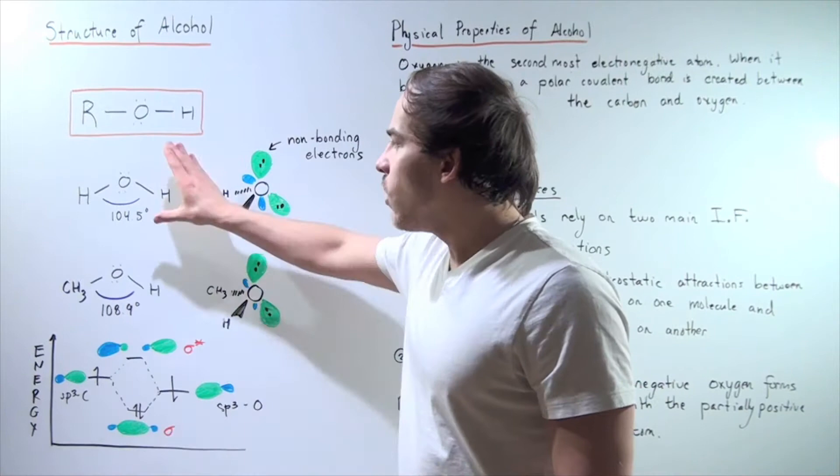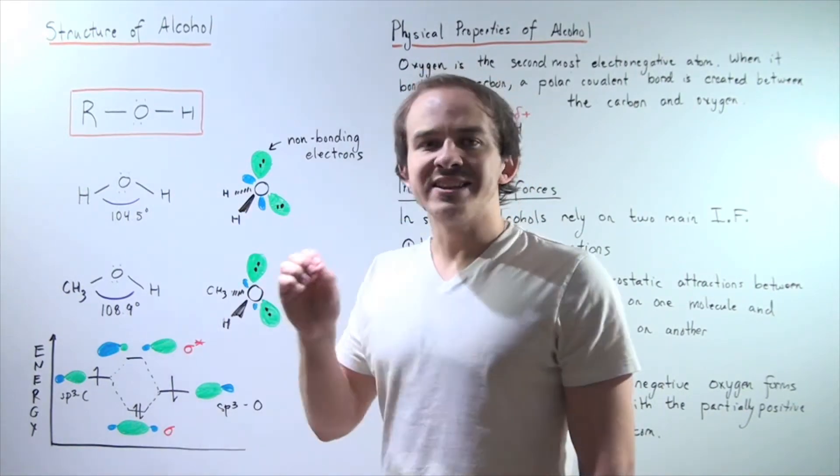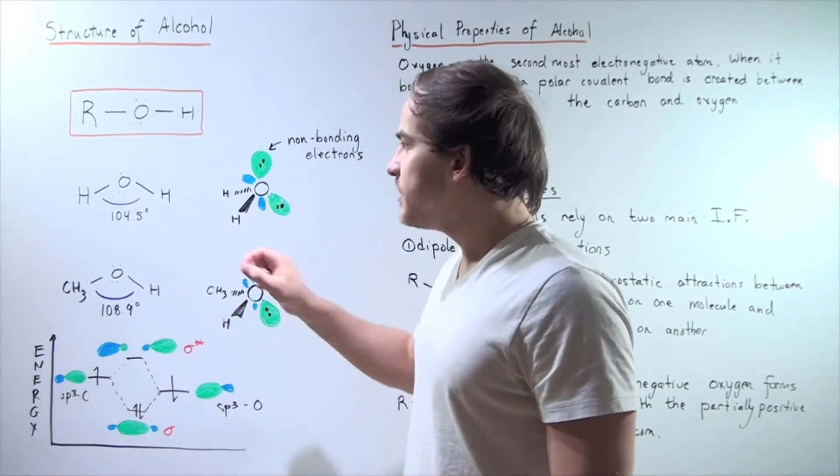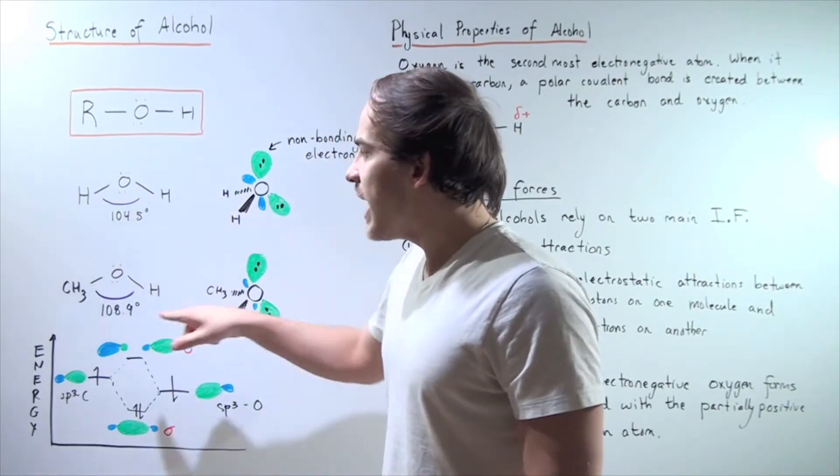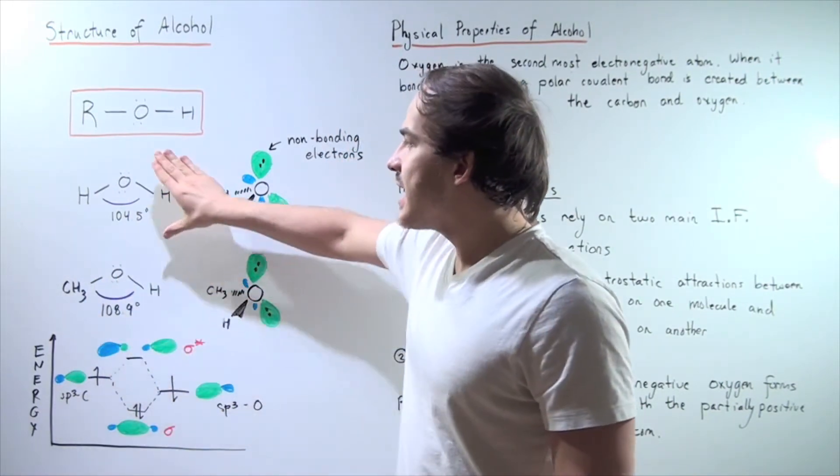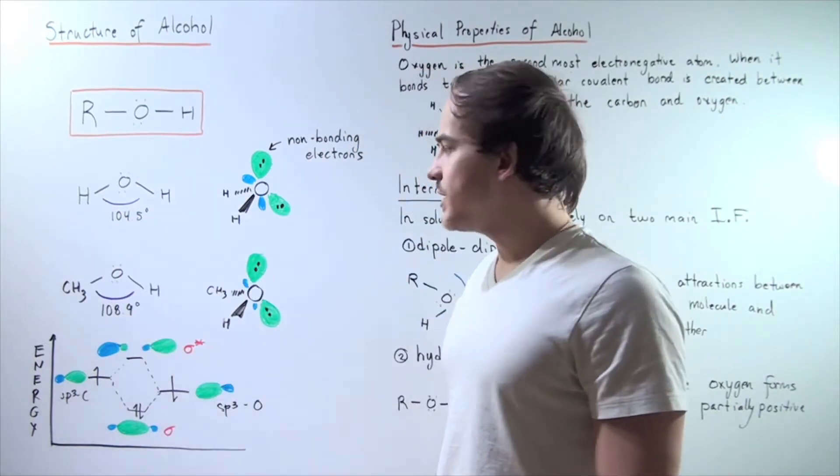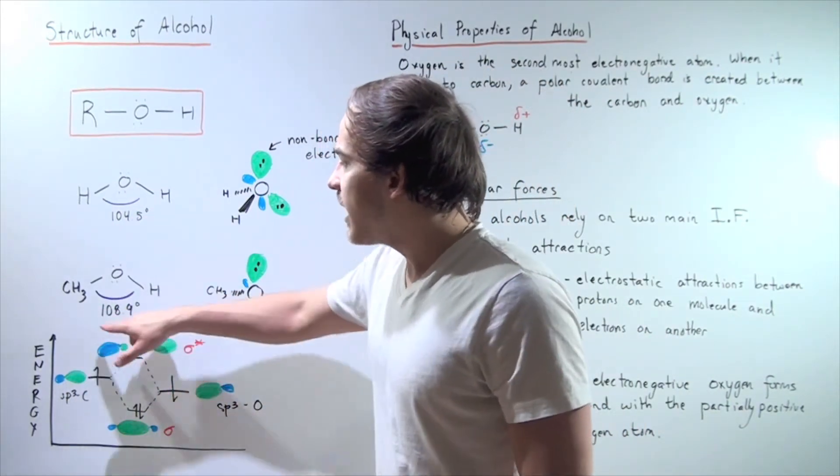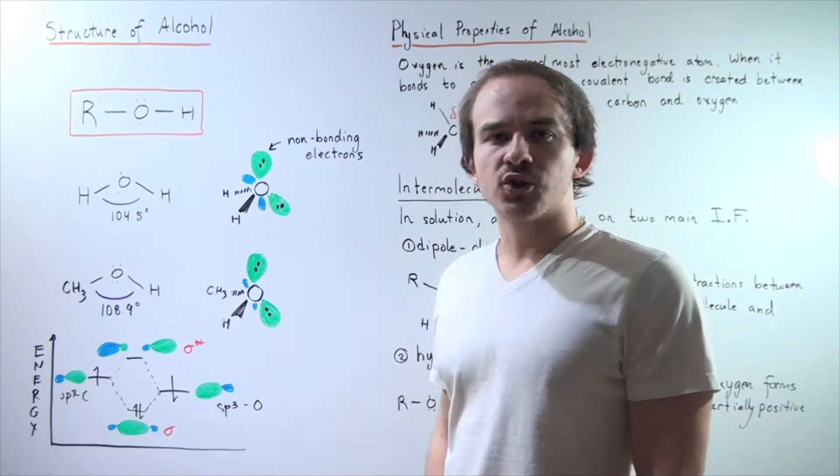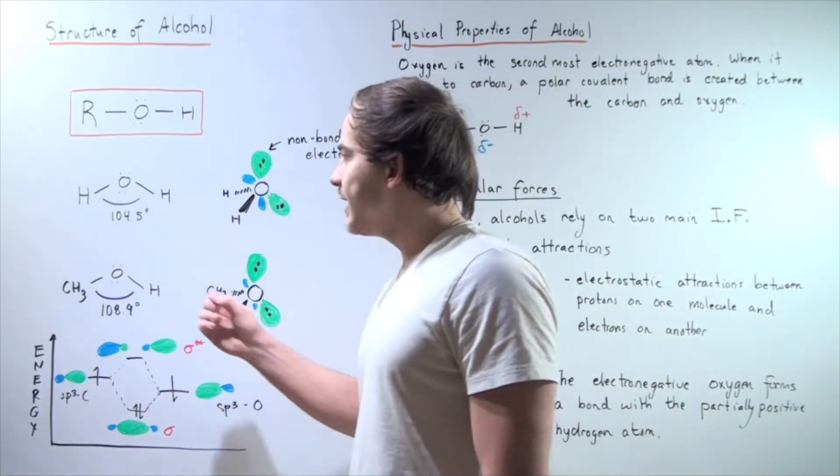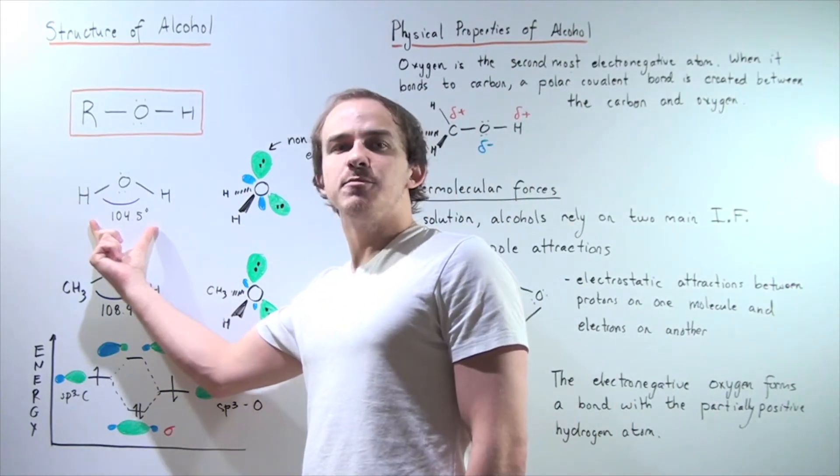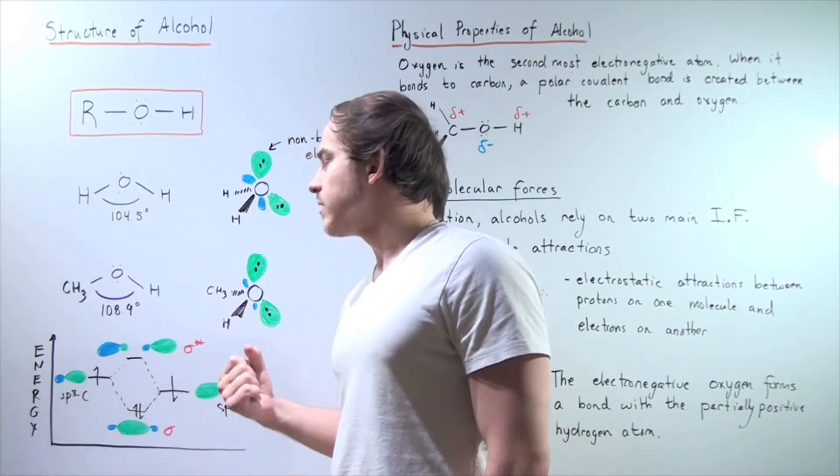Notice that both of these compounds are non-linear. There is an angle between this HOH and this COH. In the water compound the angle is 104.5 degrees and in the methanol the angle is 108.9 degrees. My question is why does this molecule bend more than this molecule?